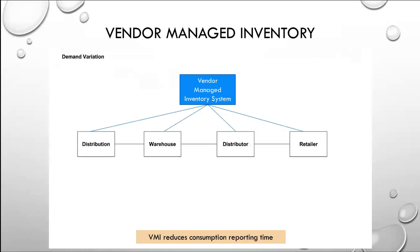We're going to talk about make-to-stock and make-to-order contracts. This is a very important concept within this regard, because the type of contracts that you create with these entities is going to determine the ability of the vendor to encourage these groups to place materials in the system. This requires a lot of trust on everyone's part. VMI reduces consumption reporting time — one of the problems in a normal supply chain is that the feedback gets delayed the more people are in the middle of the feedback chain.